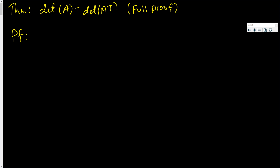In an earlier video, I gave a partial proof showing that the determinant of A is equal to the determinant of A transpose. My proof hand-waved on the plus or minus sign — that is, I showed that these two were equal up to a sign. For example, if the determinant of A is 7, I showed that the determinant of A transpose was plus or minus 7, but just stated a reason without showing why it would be plus 7. Hence, partial proof. Now this full proof is going to be 100% valid, but it will take a lot longer. So let's get right into it.